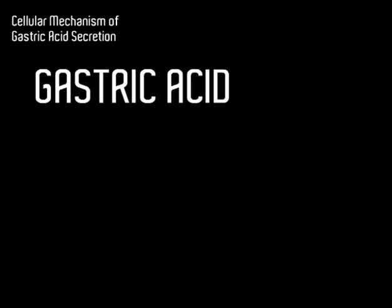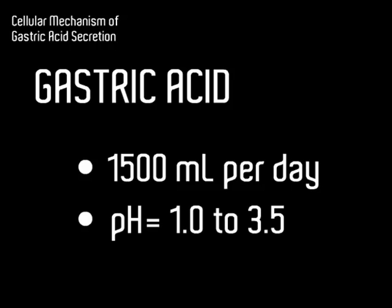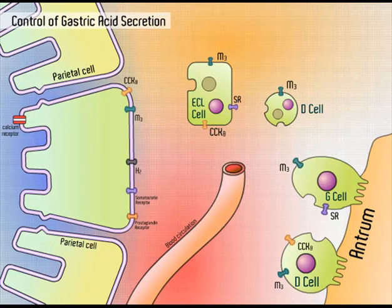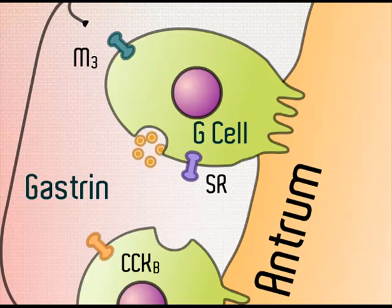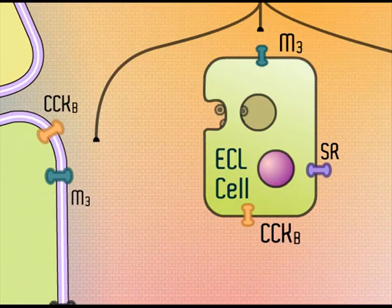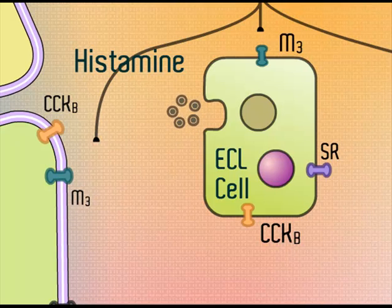Gastric acid is produced at an average rate of 1,500 ml per day with a pH of 1 to 3.5. Gastric acid secretion involves three physiological agonists: acetylcholine released by cholinergic nerve terminals, gastrin from G-cells, and histamine secreted by gastrin-stimulated enterochromaffin-like cells, or ECL cells.